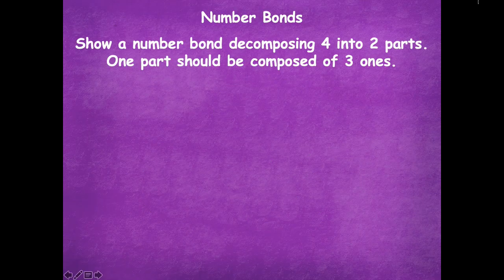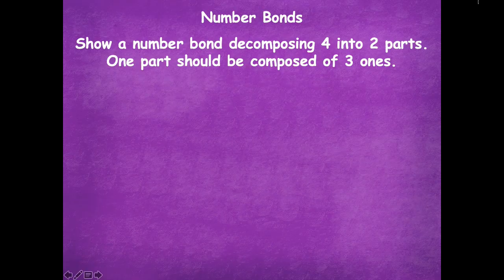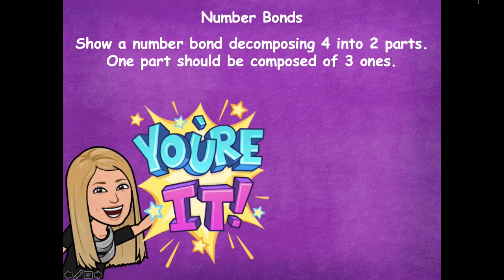Now show a number bond decomposing four into two parts. One part should be composed of three ones this time. So last time we had four parts and each was one one. This time make a number bond showing four split into two parts — one part composed of three ones — and you have to figure out what the other part is. Pause the video, draw your number bond, and click play when you're ready to go over it together.